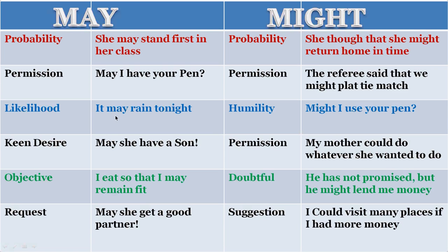For likelihood: 'It may rain tonight — there is every likelihood.' If you want to express keen desire or a blessing: 'May she have a son.' For permission in the past, you can use could or might: 'My mother could do whatever she wanted to do' or 'My mother might do whatever she wanted to do.'